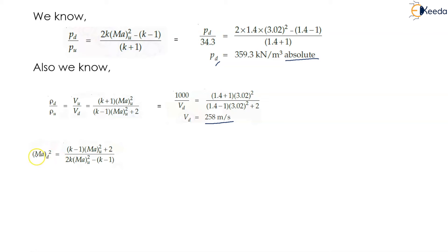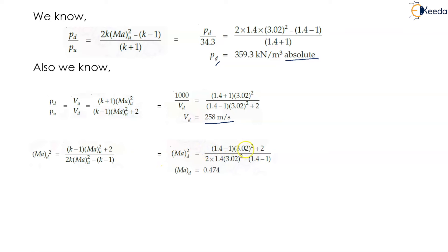Now I need to calculate the downstream Mach number, which equals (K minus 1) times Mach number upstream squared plus 2, divided by 2K times Mach number upstream squared minus (K minus 1). This becomes (1.4 minus 1) times 3.02 squared plus 2, divided by 2 times 1.4 times 3.02 squared minus (1.4 minus 1). So the Mach number downstream is equal to 0.474.